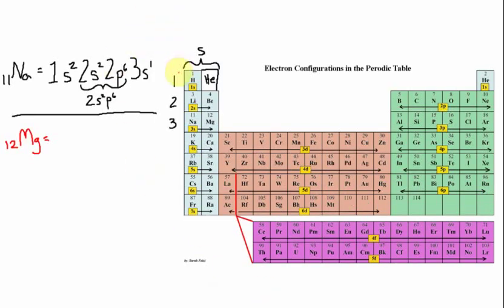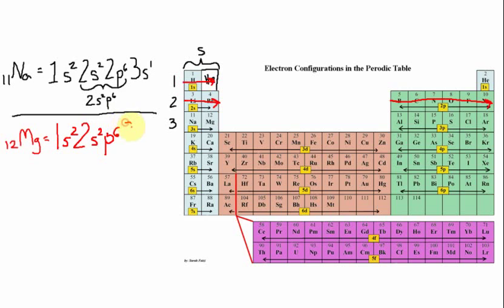The next element is magnesium. Magnesium has 12 electrons — let's place them. On the first energy level, the S orbital holds 2 electrons — filled up. On the second energy level, the S orbital holds 2 electrons — filled up. The P orbital on the second energy level holds 6 electrons — filled up. The next place is the third energy level, where the S orbital holds 2 electrons. Checking: 2 plus 2 is 4, plus 6 is 10, plus 2 is 12. We've found all 12 electrons in magnesium.